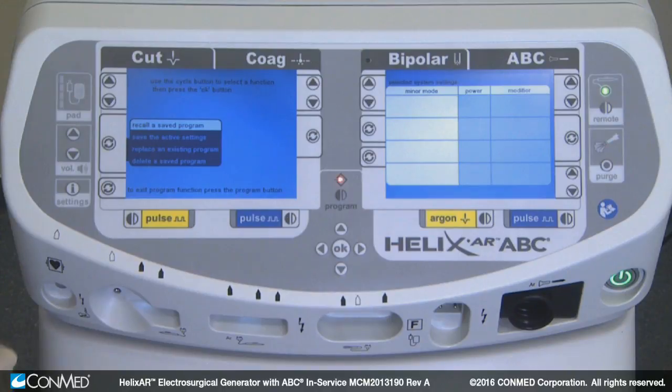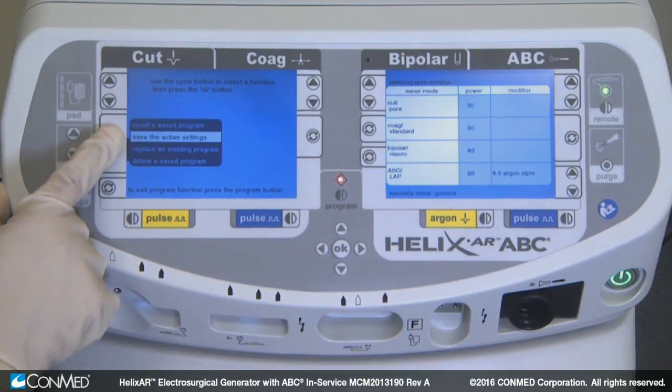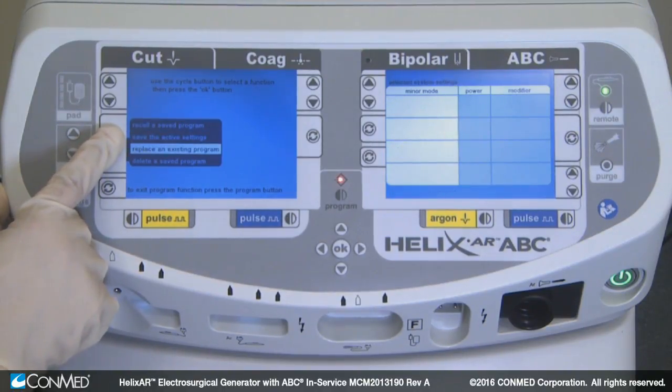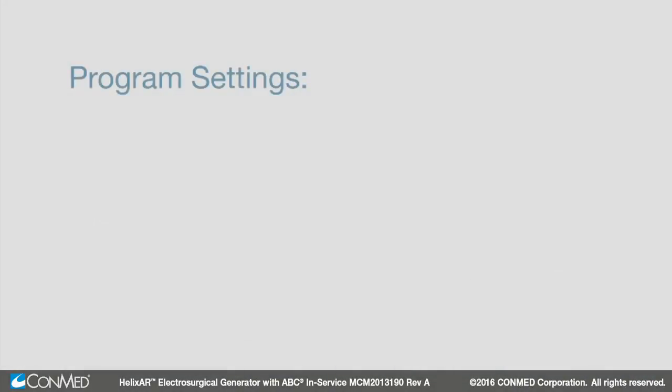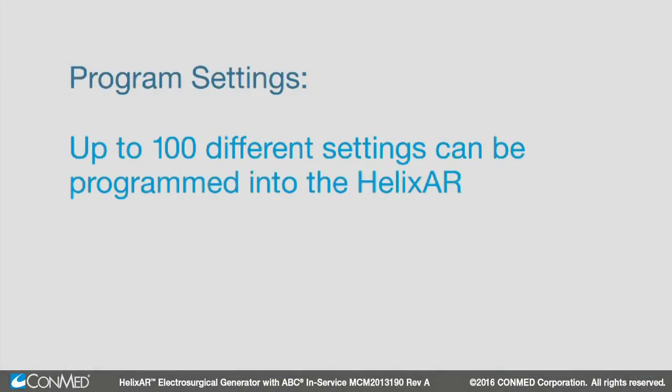By using the cycle button, you can recall, save, replace, and delete the program. Up to 100 different settings can be programmed into the Helix.